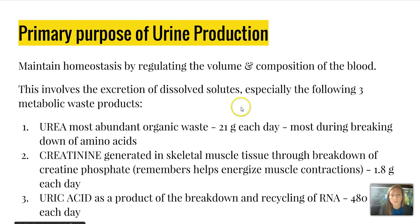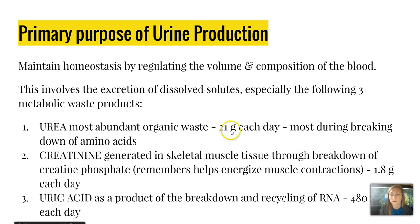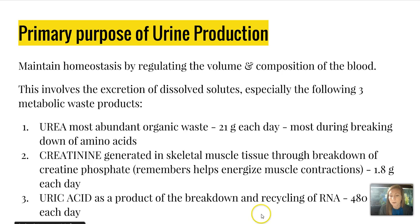The primary purpose of urine production is to maintain homeostasis by regulating the volume and composition of blood. This involves excretion of three main metabolic waste products: urea — the most abundant organic waste, about 21 grams per day, mostly from the breakdown of amino acids; creatinine — generated in skeletal muscle from the breakdown of creatine phosphate that energizes muscle contractions, about 1.8 grams per day; and uric acid — a product of RNA breakdown and recycling, about 480 milligrams per day.